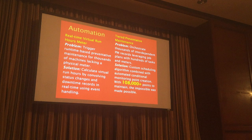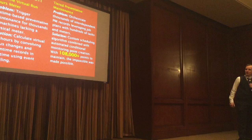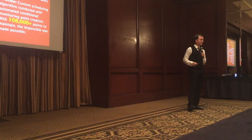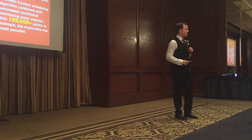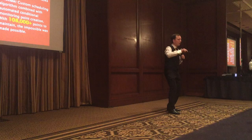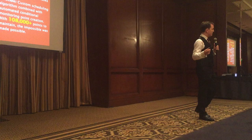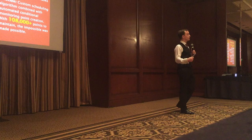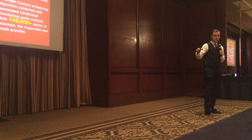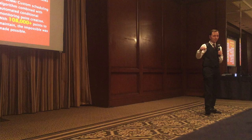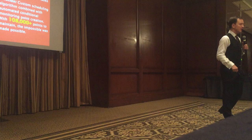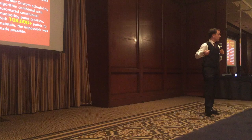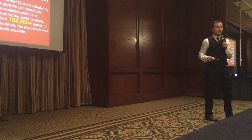Another example: we have a tiered preventive maintenance program with a special algorithm for generating work. This customer has a lot of job plans, and those job plans have a lot of meters. You have to have a conditional monitoring point set up in order to get the meter readings off of the work order onto the asset history. We built a customization so that whenever a job plan was assigned to a work order, it first ensured those conditional monitoring points existed for that asset-job plan pair. If they didn't, it created them using default values. That customization alone manages 108,000 conditional monitoring points for this customer.